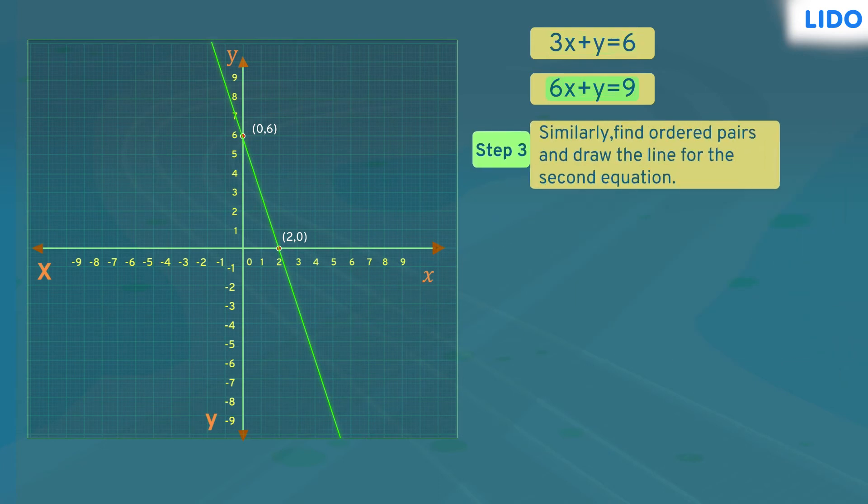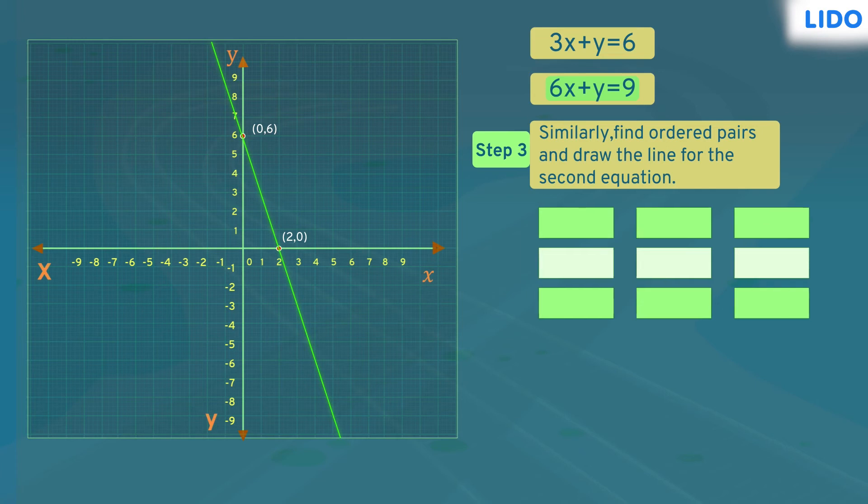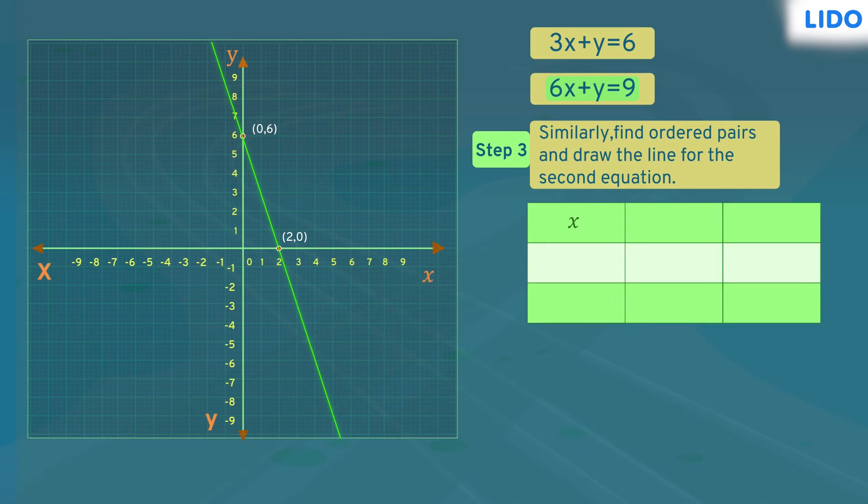Now we have to plot the line for the second equation. In the second equation, when x equals 0, y will be 9, and when y equals 0, x will be 1.5. So our ordered pairs are (0,9) and (1.5,0).